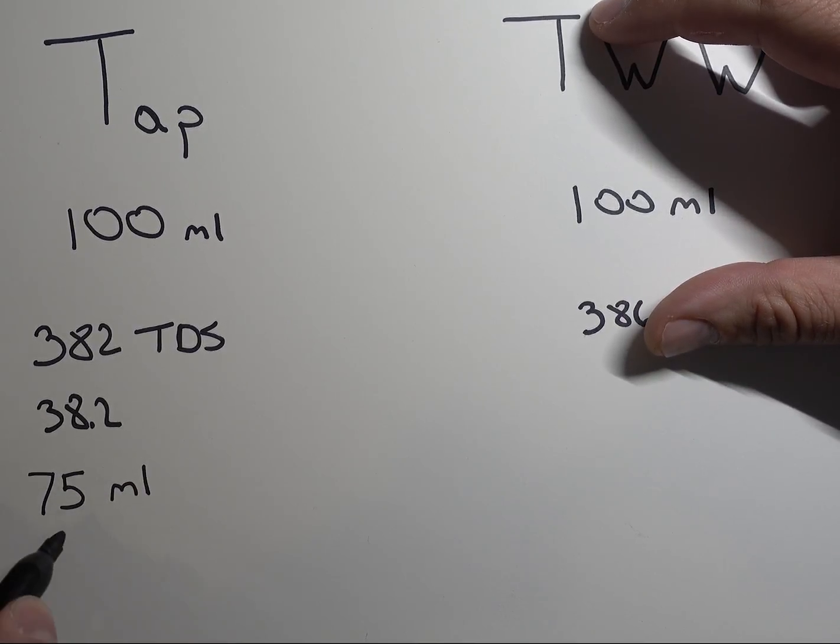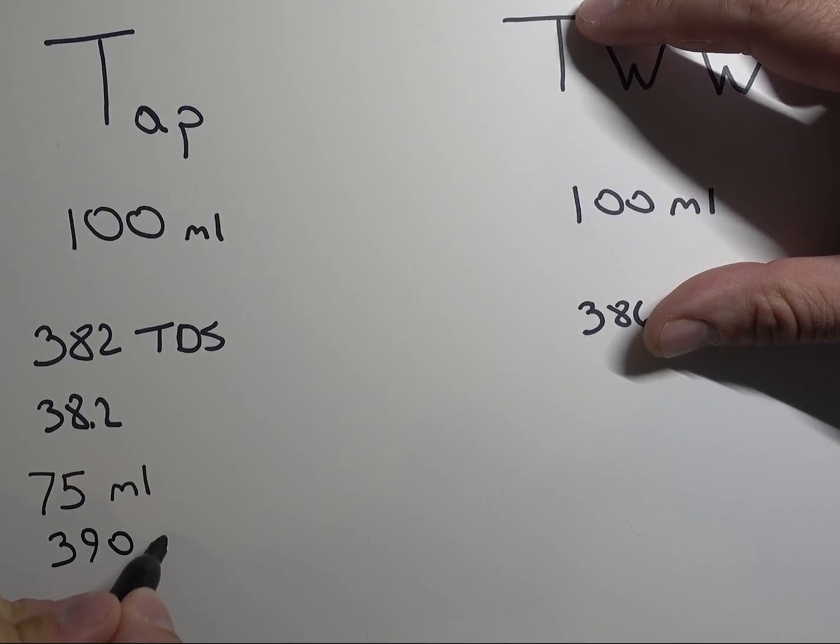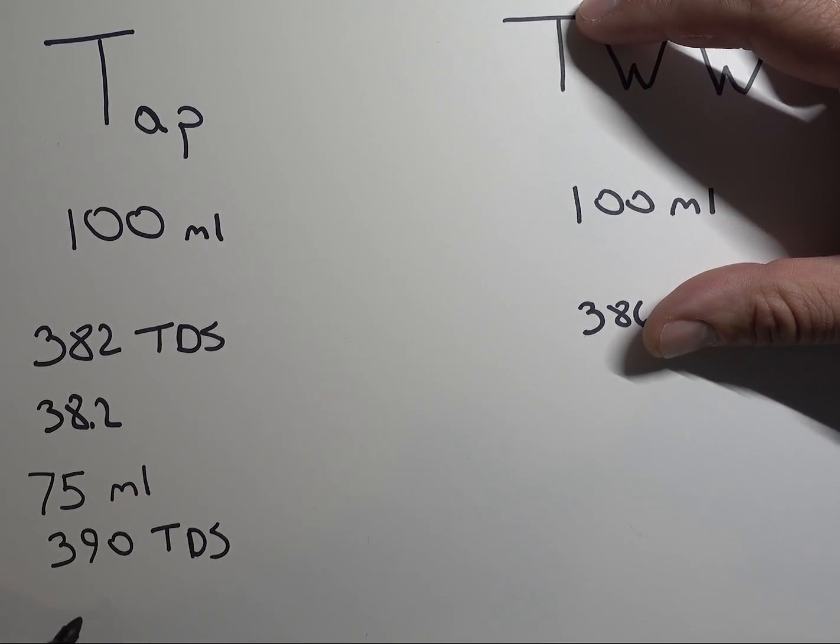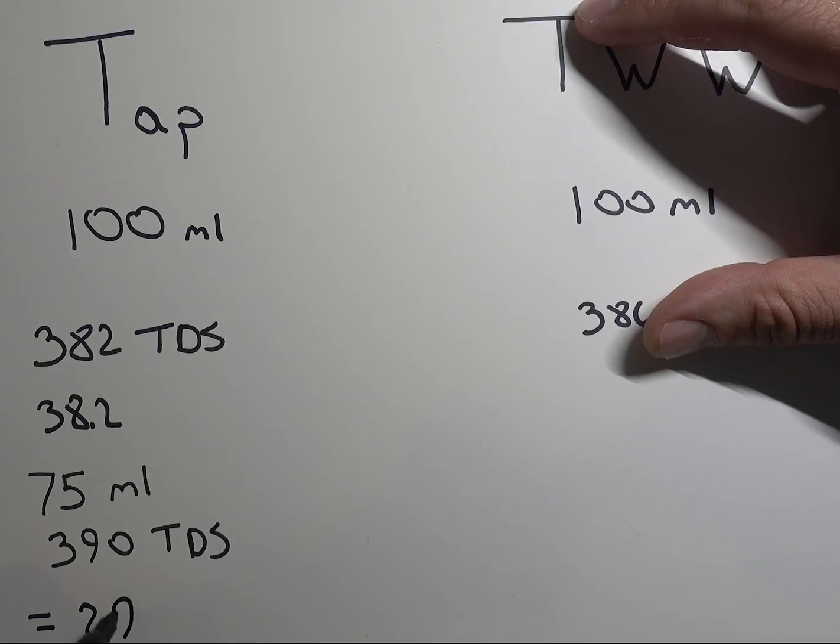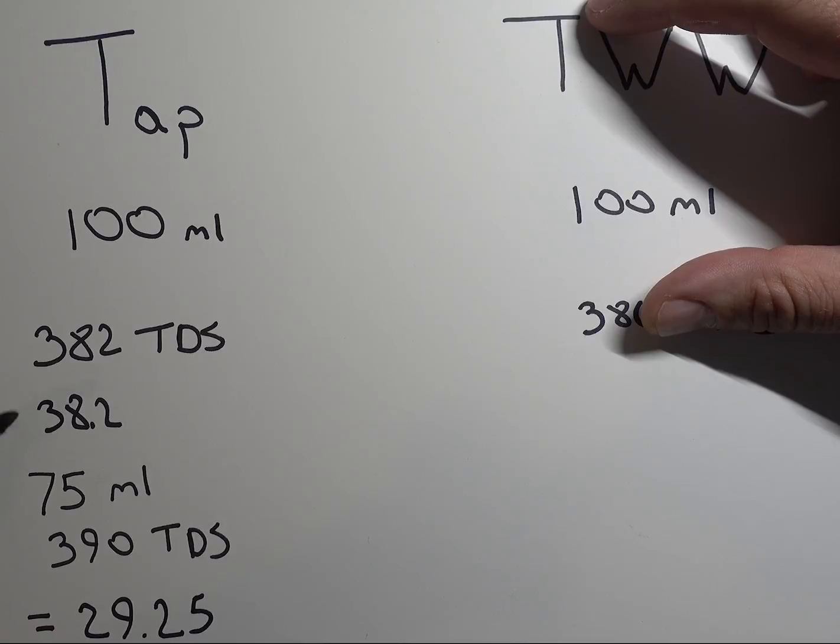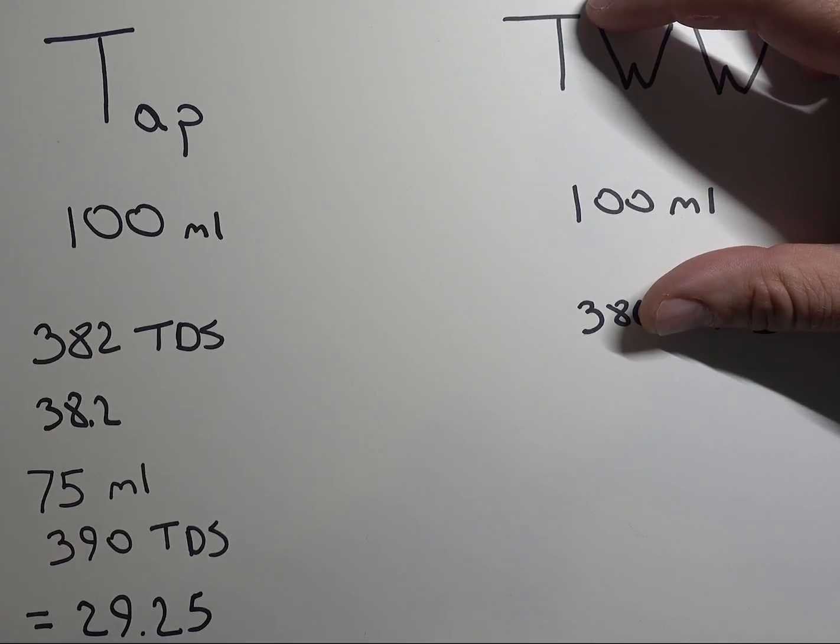And the total TDS after that was 390 TDS, or milligrams per liter. So when we do the calculations there, the resulting total weight is 29.25. So in solution, dissolved, we started off with 38.2. And after we heated it up, it caused some of the calcium to precipitate out of solution. And the final amount of calcium in solution was 29.25.